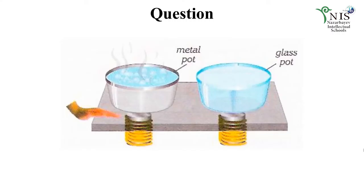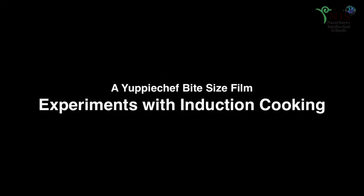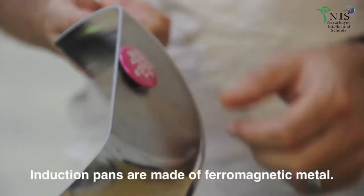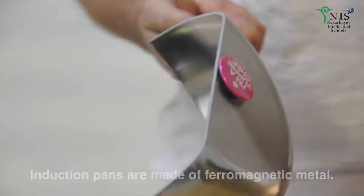Dear audience, in the picture you can observe that two pots of water are placed on an induction stove. The stove itself is cool to touch. The water in the metal pot is boiling while that in the glass pot is not. How can such a cool stove boil water, and why isn't the water in the glass pot boiling? To answer this question, let's observe a video showing some experiments done by a colleague.